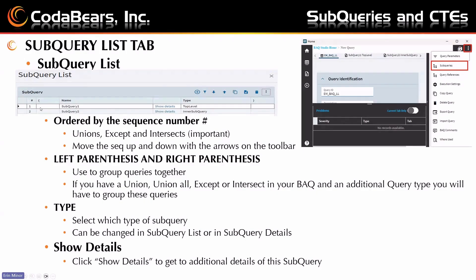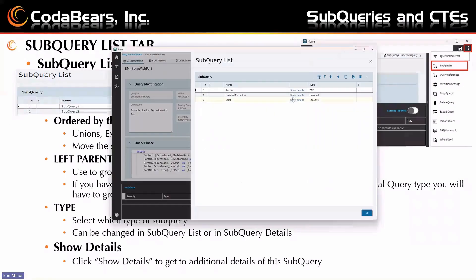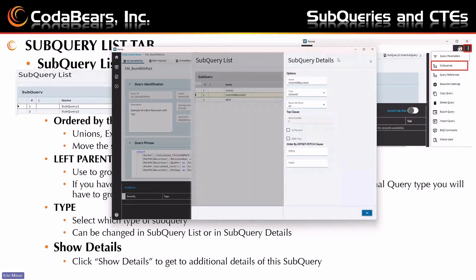There's also an option to add left and right parentheses. You can do this if you have a bunch of subqueries with a union and then a union all — you might want to have those union alls together so they don't interfere with another query. The Type field is where you choose if it's a top level, a CTE, a subquery, and so on. You can choose it here or later in subquery details. You can also click Show Details and it will pop up the subquery details screen.